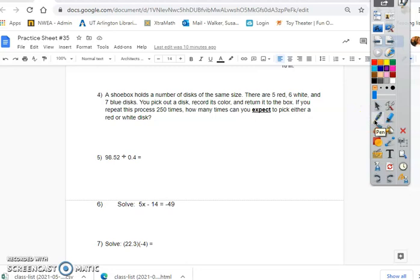And let's look at the next one. Good problem. A shoe box holds a number of discs of the same size. There are five red, six white, and seven blue discs. You pick out a disc, record the color, and return it to the box. If you repeat this process 250 times, how many times can you expect to pick either a red or a white? So we're actually going to change this. Because we did this one last week, so I'm going to switch this. Everything is exactly the same. We're just going to make it easier. We're going to say, how many times will you get a blue disc.